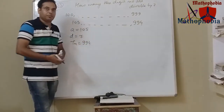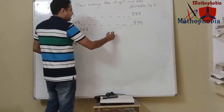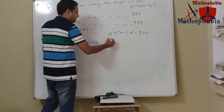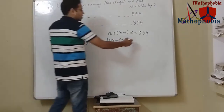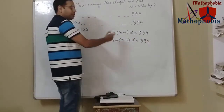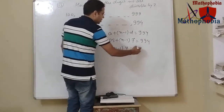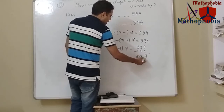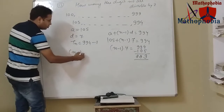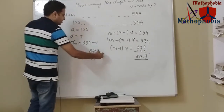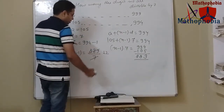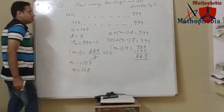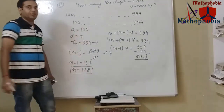Applying the formula Tn = a + (n-1)d, we get: 105 + (n-1)×7 = 994. So (n-1)×7 = 994 - 105 = 889. Therefore n - 1 = 889/7 = 127, giving n = 128. So overall there are 128 three-digit numbers which are divisible by 7.